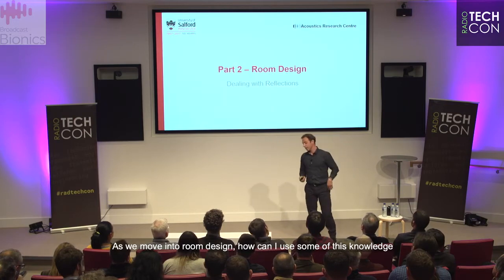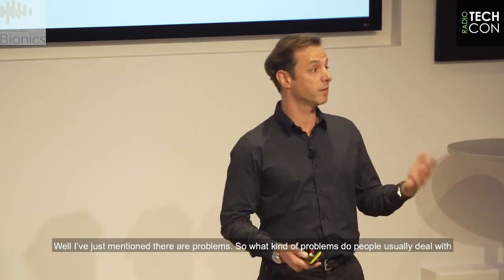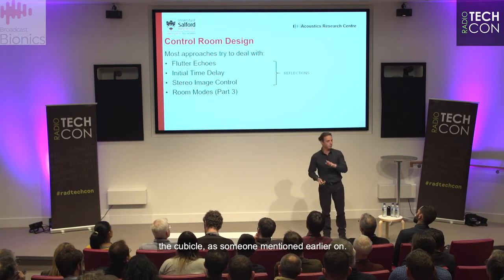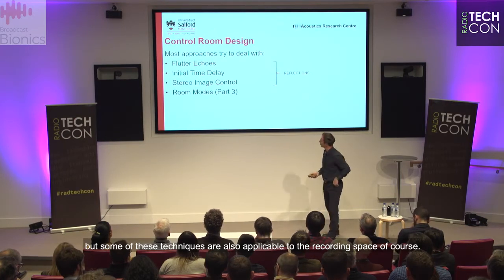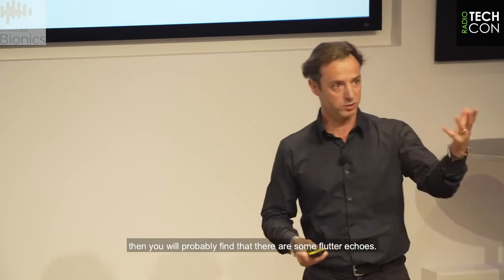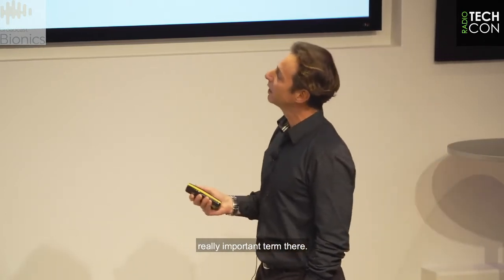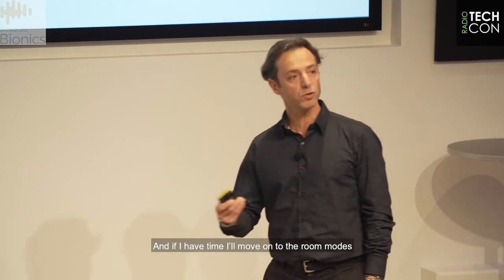Moving into room design: how can we use this knowledge to treat acoustic problems? I'm focusing on control room design — where you monitor the sound. What kind of problems do we usually find? If the room is completely untreated, or you have parallel bare walls, you'll probably find flutter echoes. You also need to focus on the initial time delay — a really important term. And you need to design for good stereo image control. If time permits, I'll then move on to room modes, the low-frequency part.